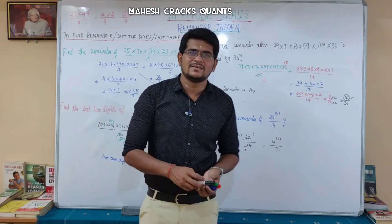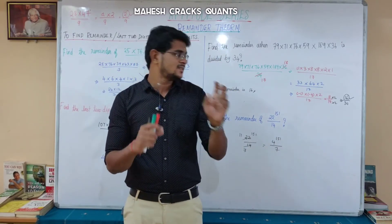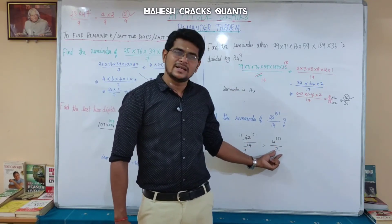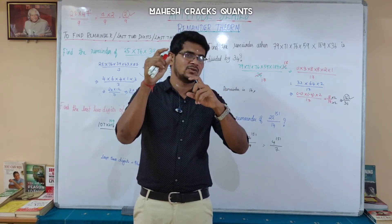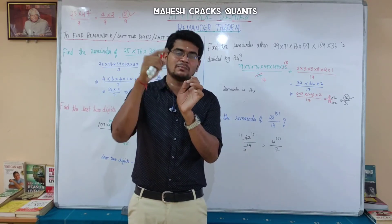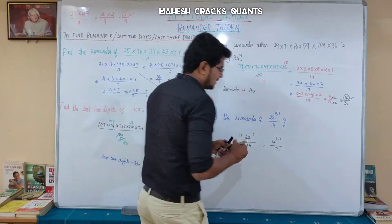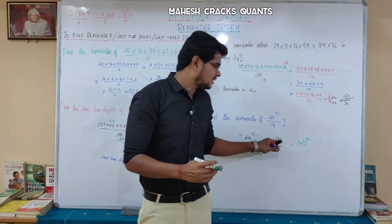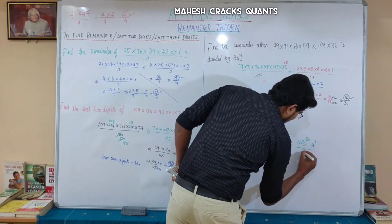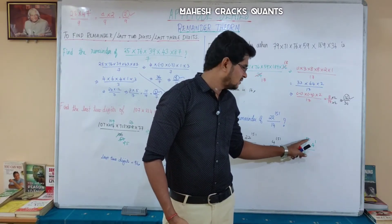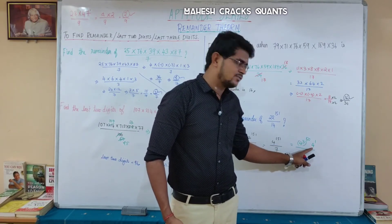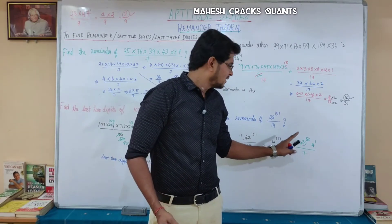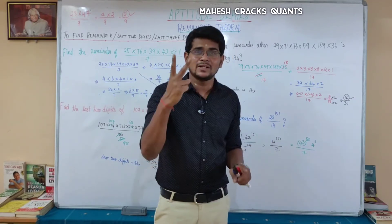What is the 4 power cycle modulo 7? 4 squared is 16 — remainder 2. 4 cubed is 64 — 9 times 7 is 63, remainder 1. So 4 cubed gives remainder 1 modulo 7. Now 151 divided by 3: 50 times 3 is 150, remaining 1. So 4 power 151 equals 4 cubed power 50 into 4 power 1. That is 1 power 50 into 4 divided by 7, which equals 4 divided by 7.